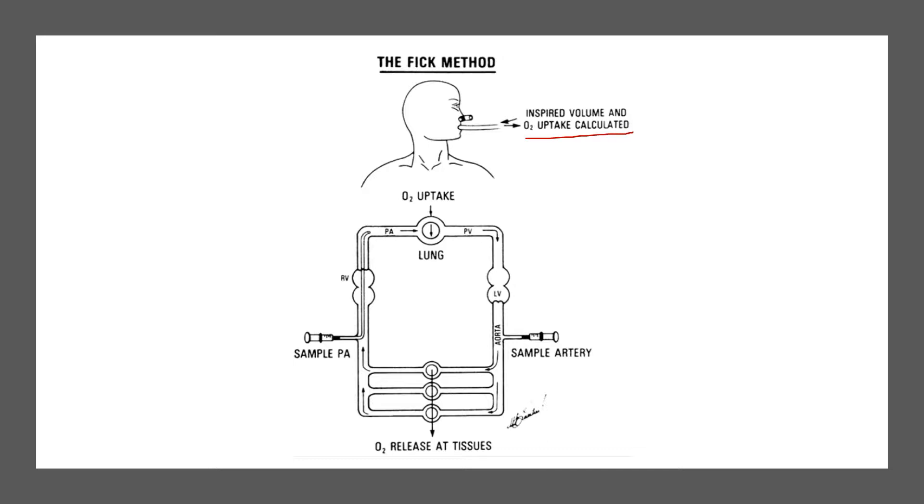We have inspired volume and the O2 uptake that is calculated. This is done by sampling the arterial and venous pressure. We have O2 uptaken into the lungs, and we have an arterial value.